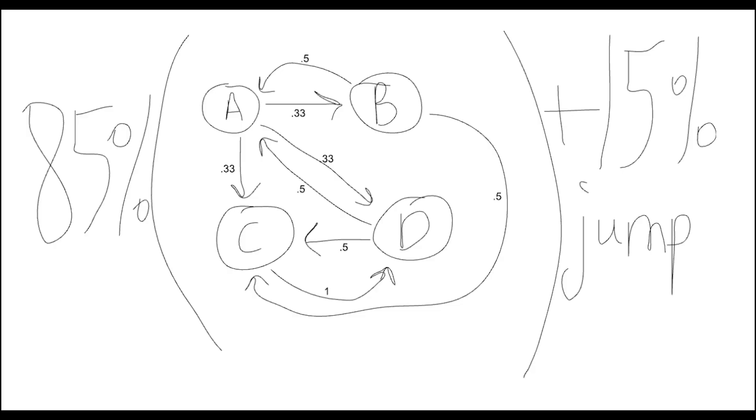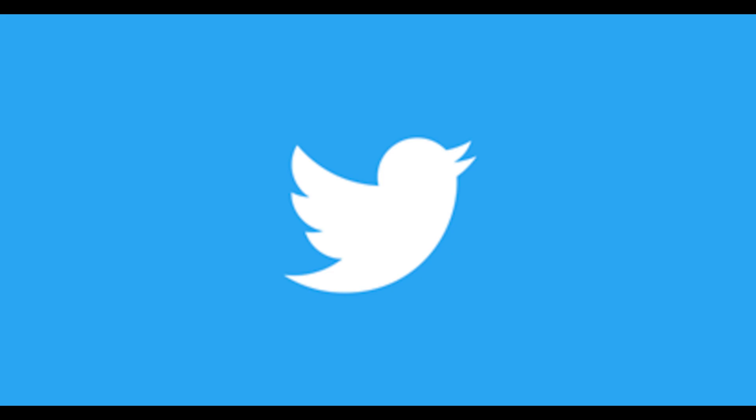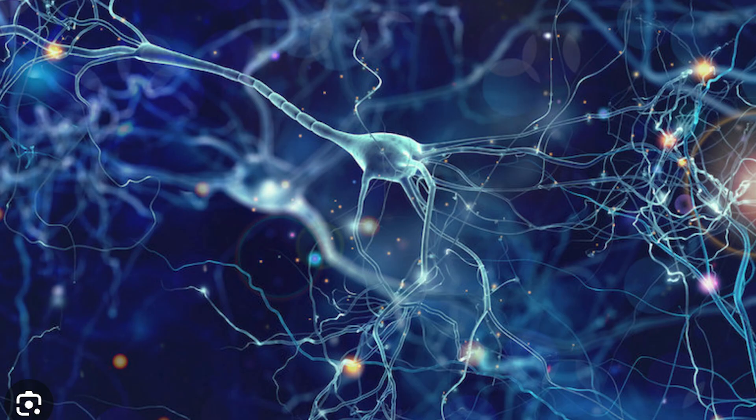To solve this problem, we introduce something called the damping factor, typically agreed upon as roughly 0.85 for the PageRank algorithm. Every time a random surfer hops from link to link, they will now only have an 85% chance of continuing to click links — there's a 15% chance that the random surfer will jump to a completely different website. One common application of the PageRank algorithm is that Twitter uses it to recommend accounts to follow. Furthermore, in neural nets, it can be used to determine relative firing rates of neurons.